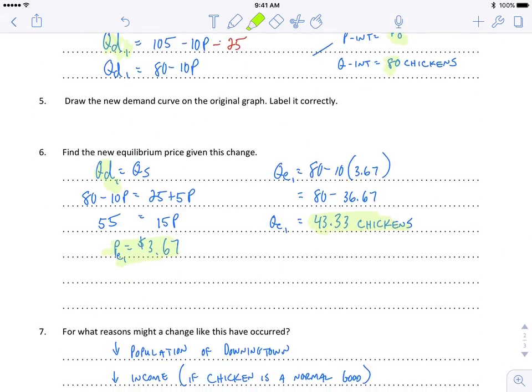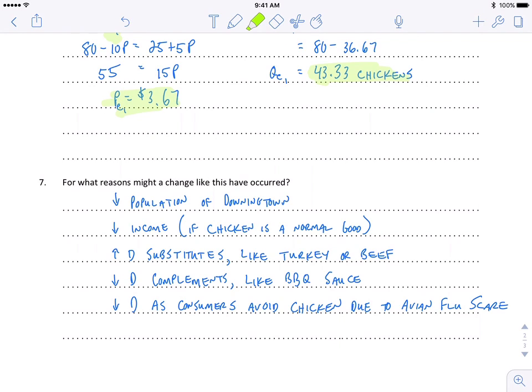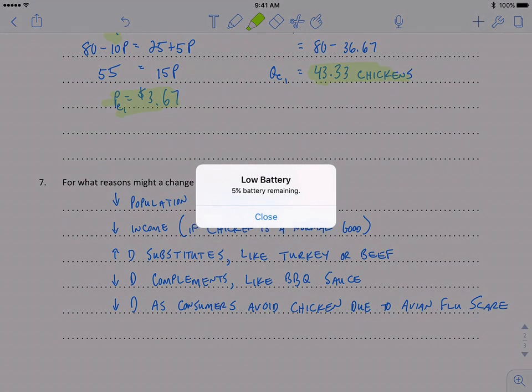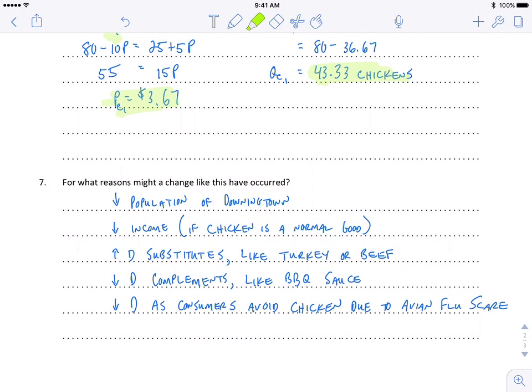Lastly, what would cause this sort of change in the demand curve? A decrease in the population of Downingtown, a decrease in income if chicken is a normal good, if it's an inferior good it would have an opposite effect. An increase in demand for substitutes like turkey or beef would then affect the decreasing demand for the substitute good chickens. A decreasing demand of complements and barbecue sauce is probably not a great complement for chicken but it was the only thing that made some relevant sense to me when I was putting this together.